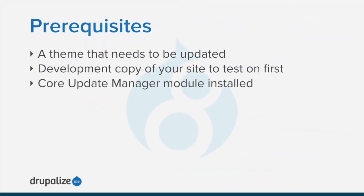Before doing this, make sure that you've got a contributed theme that's been installed and there's an update available for it, that you've got a development version of your site you can test on first, and that you've created a full site backup before proceeding on the live site. Finally, the core update manager module must be installed in order to run the database update script. See the written version of this tutorial for links to each of these prerequisites.